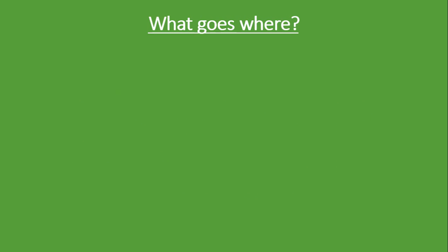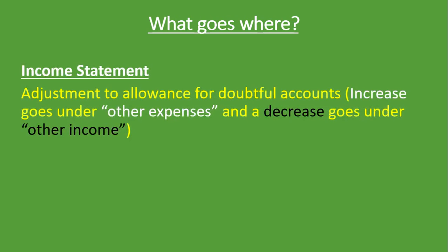Many students would ask what goes where — what goes into the Income Statement and what goes into the Balance Sheet. Here's something to remember: the Adjustment to Allowance for Doubtful Accounts goes into the Income Statement. If the adjustment or new Allowance for Doubtful Accounts has increased, it goes under Other Expenses, and if it has decreased, it goes under Other Income.